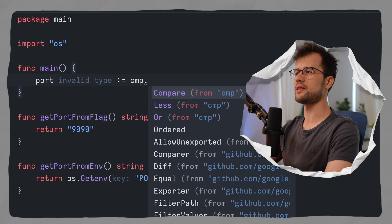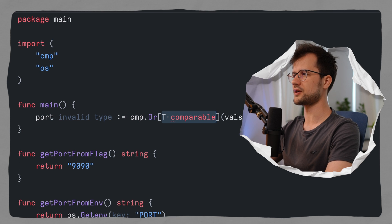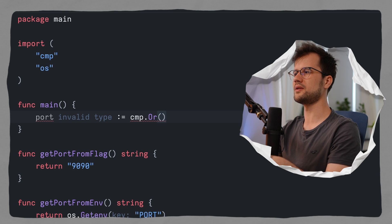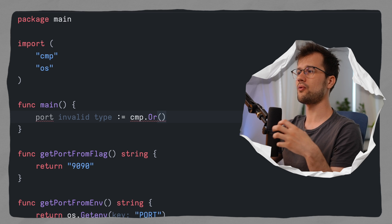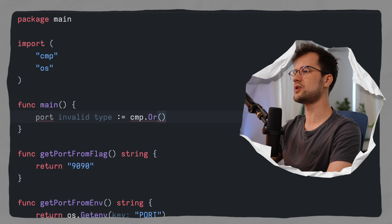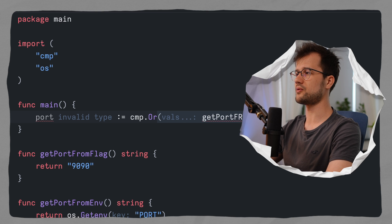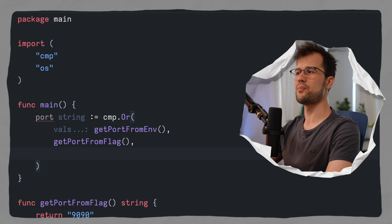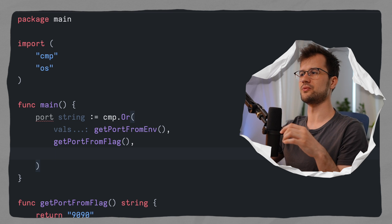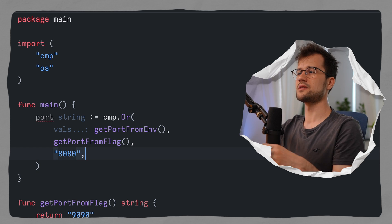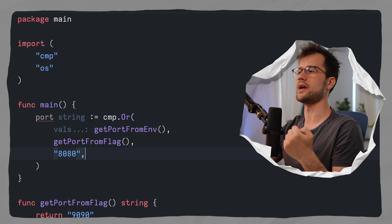In our main function we declare port and make use of the cmp.or function. All we have to do is specify all the values we want in this or list, and the cmp.or function returns the first non-zero value. So we say getPortFromEnv as our first argument, then getPortFromFlag, and then if both functions return an empty string, we will just return 8080. So the last fallback value is in this case always port 8080.